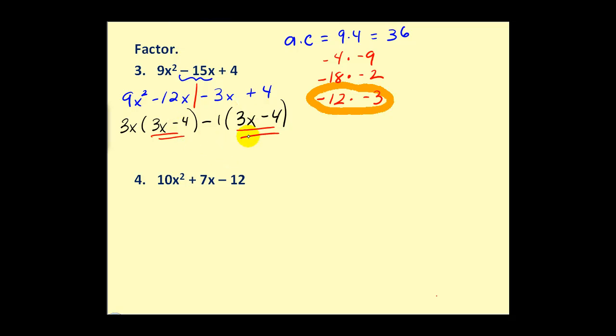We have a common binomial factor. So our last step, if we factor out the common binomial factor of 3x - 4, we're left with 3x - 1. And we have factored the original trinomial using the grouping technique. Let's try another one.